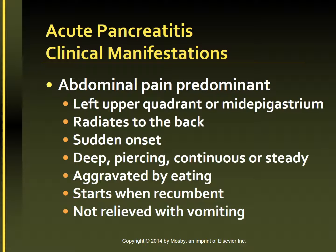Clinical manifestations of acute pancreatitis: Abdominal pain is a predominant manifestation. The pain is due to distention of the pancreas, peritoneal irritation, and obstruction of the biliary tract. The pain is usually located in the left upper quadrant but may be in the mid-epigastrium, and it commonly radiates to the back because of the retroperitoneal location of the pancreas. The pain has a sudden onset and is described as severe, deep, piercing, continuous, and steady. It is aggravated by eating, frequently has its onset when the patient is recumbent, and is not relieved by vomiting.